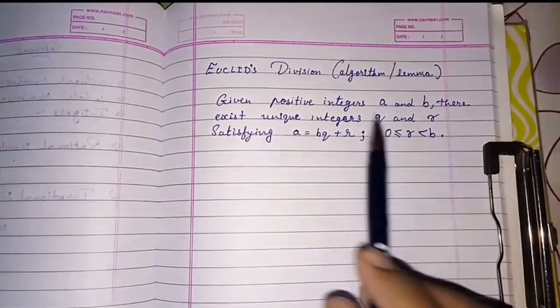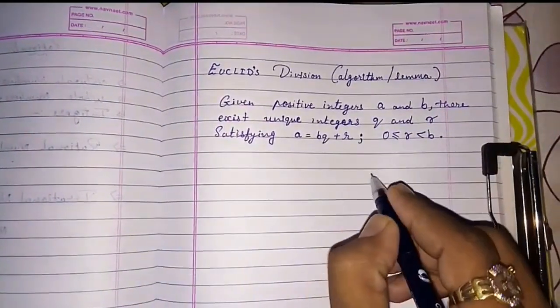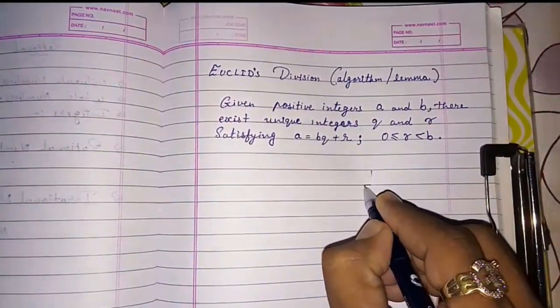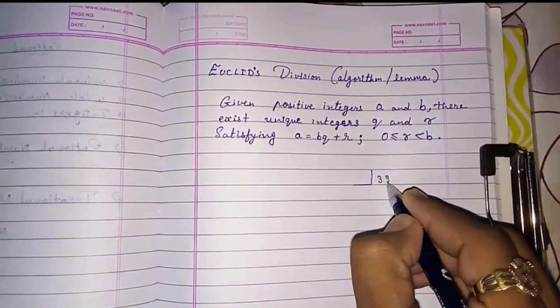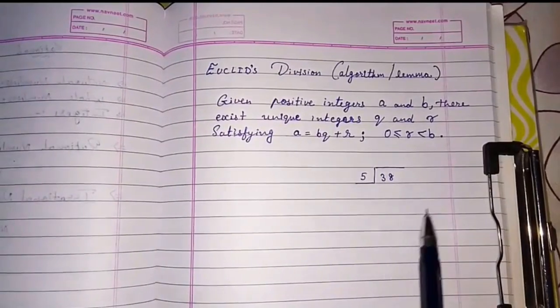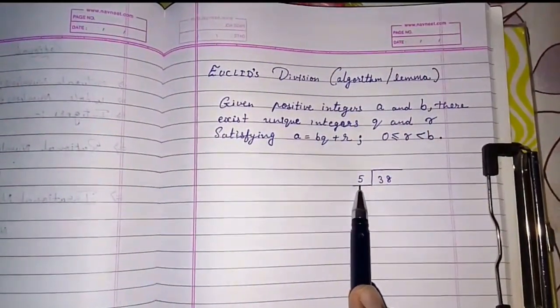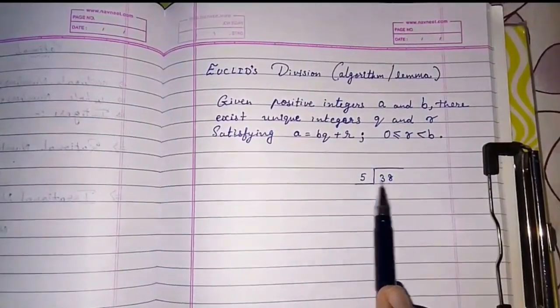You will not understand anything here where it said the two integers are there. Let me give one example. If I want to divide number 38 by 5, I am having two numbers. This is dividend, this is divisor. If I am going to divide it, these are the two numbers.